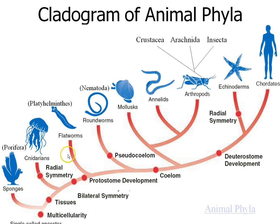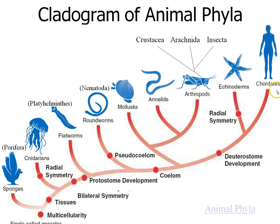This is called a cladogram, and it shows the evolutionary relationships between different organisms going back in time. Multicellularity here is the precursor or ancestor of all animals — hundreds of millions of years ago. The first type of animal we find in the fossil record are the sponges, then cnidarians, flatworms, roundworms, mollusks, annelids, arthropods, echinoderms, and lastly chordates. Tomorrow we'll do some practice with these cladograms, these family trees.